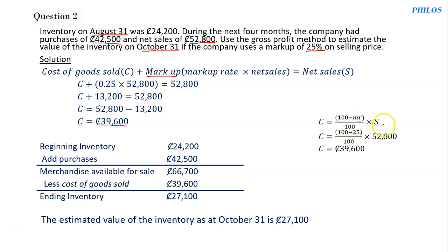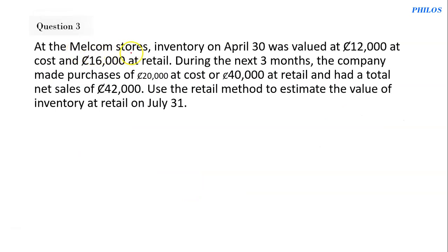That gives: (100 minus 25) divided by 100, times 52,800. When you put this on your calculator you get 39,600 — the same result. So you can use either formula. Question three: at the Melcom Stores, inventory on April 30th was valued at 12,000 at cost and 16,000 at retail.